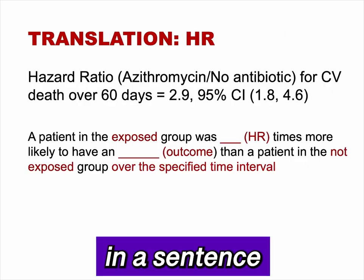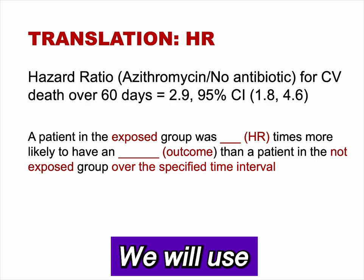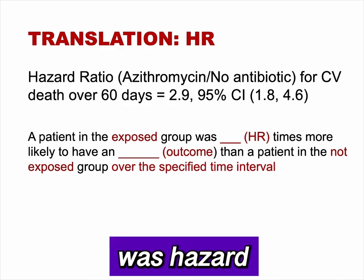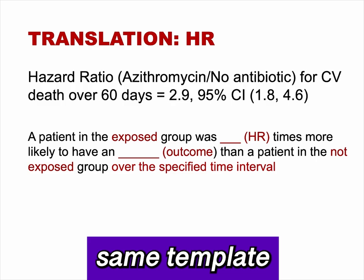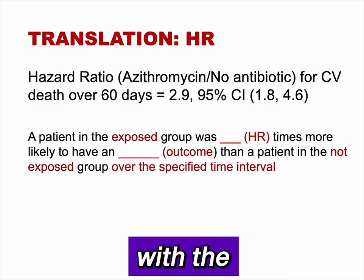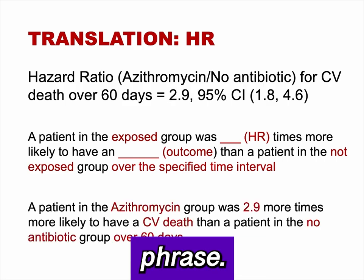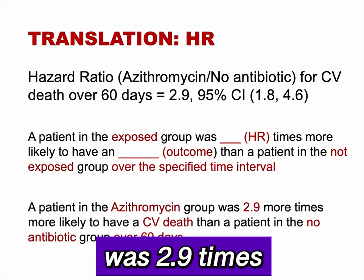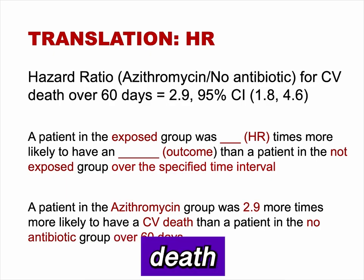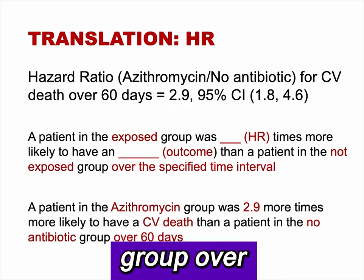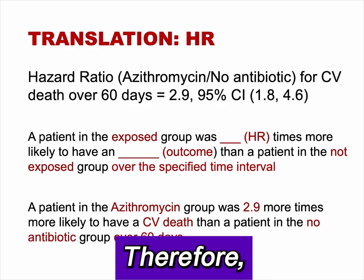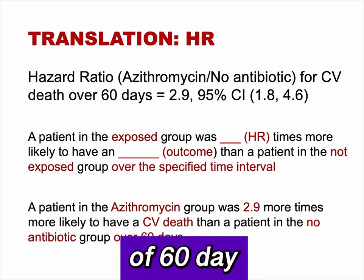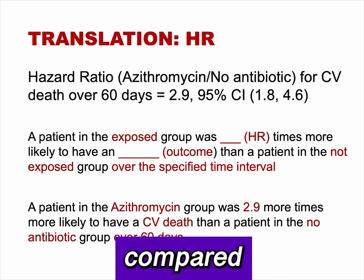It is important to be able to express a hazard ratio in a sentence using the study parameters. The template is: 'A patient in the exposed group was [hazard ratio] times more likely to have an outcome than a patient in the not-exposed group over the specified time interval.' In this example, a patient in the azithromycin group was 2.9 times more likely to have a cardiovascular death than a patient in the no-antibiotic group over 60 days. The confidence interval for the hazard ratio does not include one; therefore, there is a statistically significant higher rate of 60-day cardiovascular death in the azithromycin group compared to the no-antibiotic group.